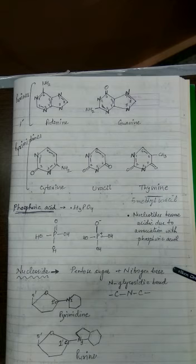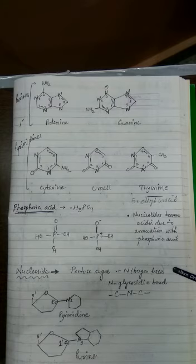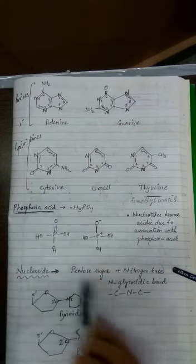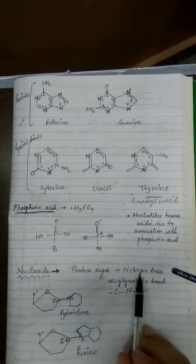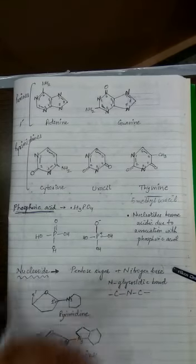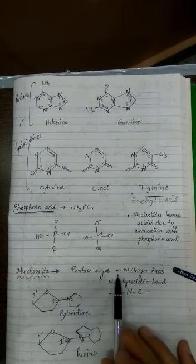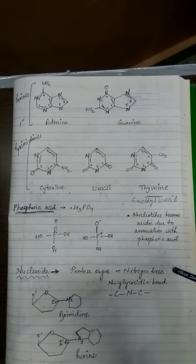Because nucleoside contains only the nitrogen base and sugar, nucleosides are basic in nature. When phosphoric acid is also added, it becomes a nucleotide, which is acidic in nature. There is only one bond involved in forming a nucleoside, whereas two bonds are involved in forming a nucleotide.